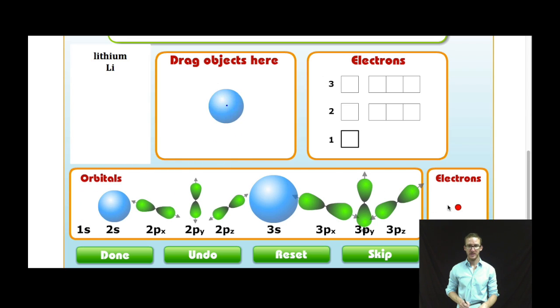First, my 1s orbital. In it I can fit two electrons. Boom! But that's the total number of electrons that I can fit in that orbital, and I still need to find a space for one more.